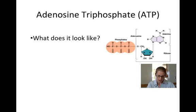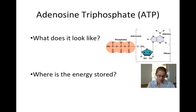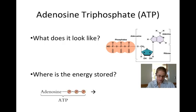You can also see the three phosphate groups. The energy in ATP is stored in the bonds between the phosphate groups, which are shown as squiggly lines in this diagram. When these bonds are broken, usable energy is released, leaving a molecule of ADP, or adenosine diphosphate, and an inorganic phosphate.